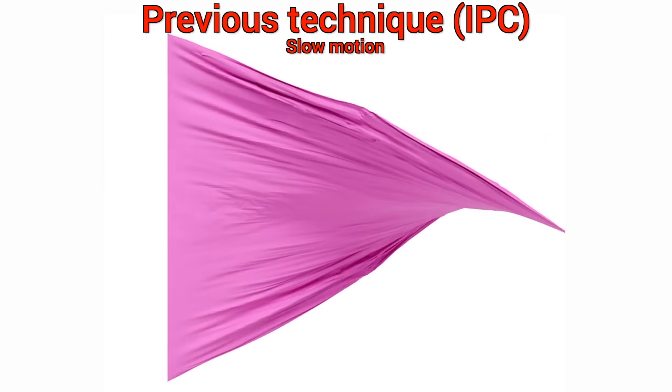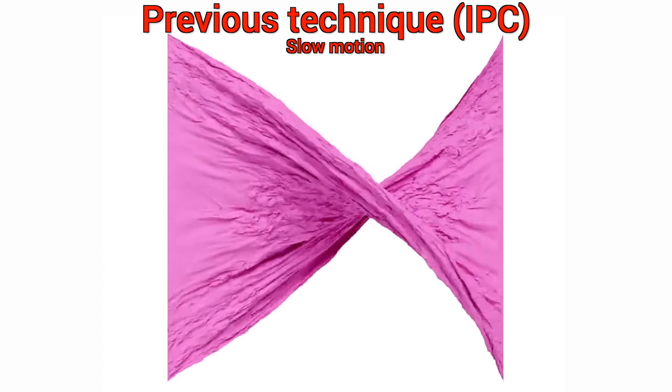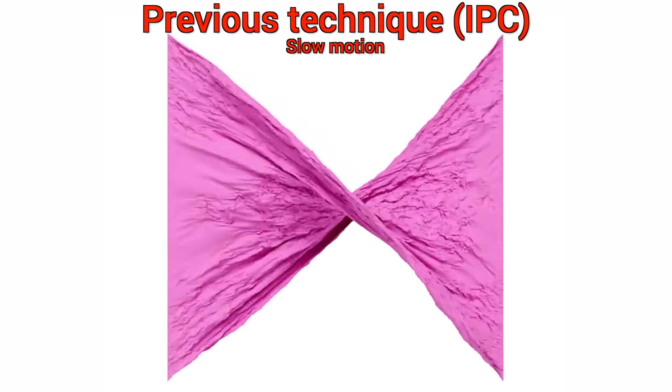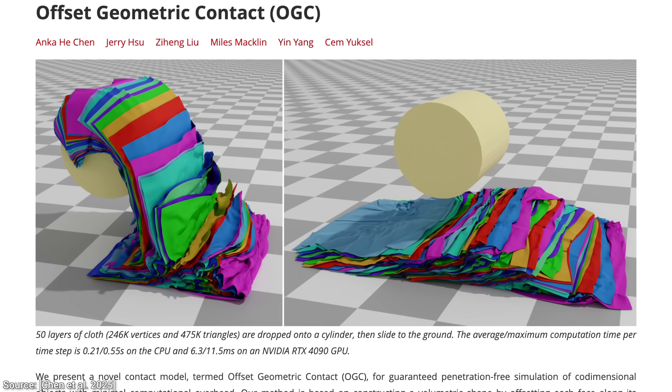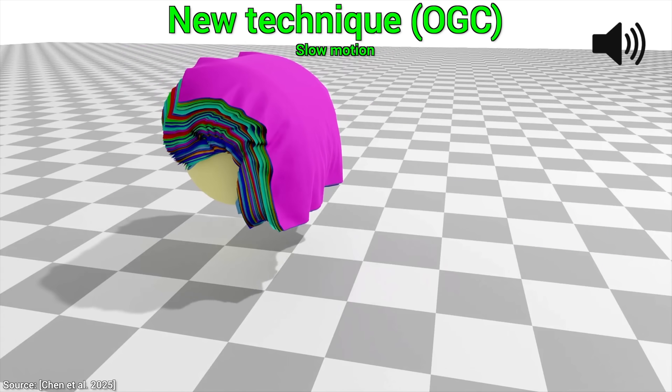On top of that, these methods sometimes applied forces at strange angles, which could cause objects like cloth to look unnaturally stretched and distorted. And yes, this is where the magic of the new technique, offset geometric contact comes in. Or, if you want to sound cool, just call it OGC.